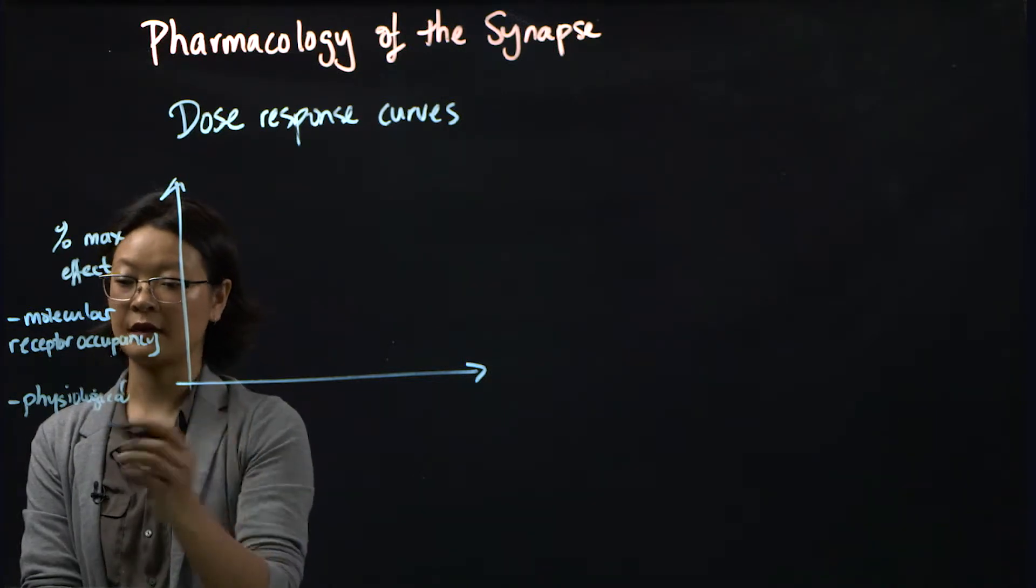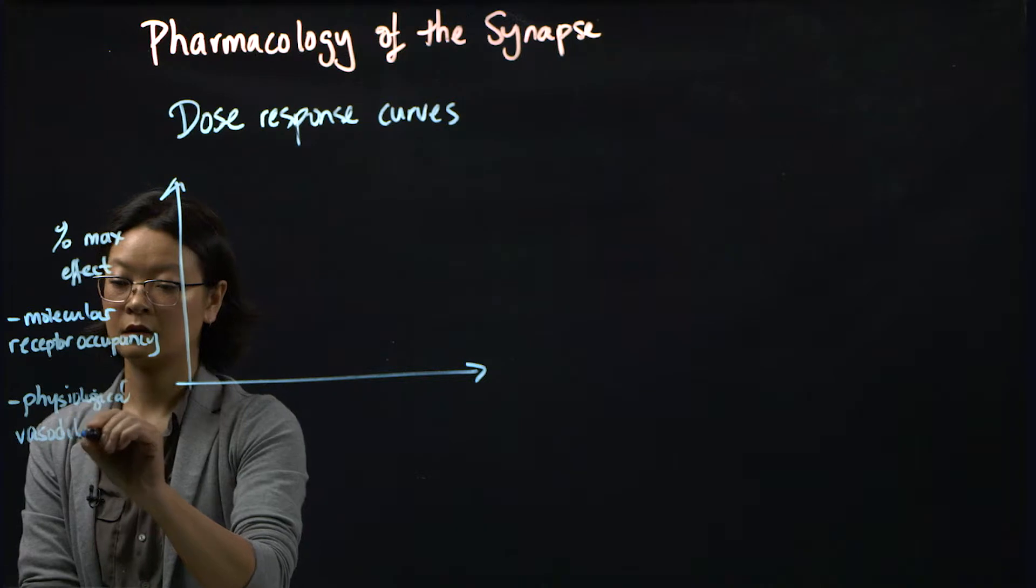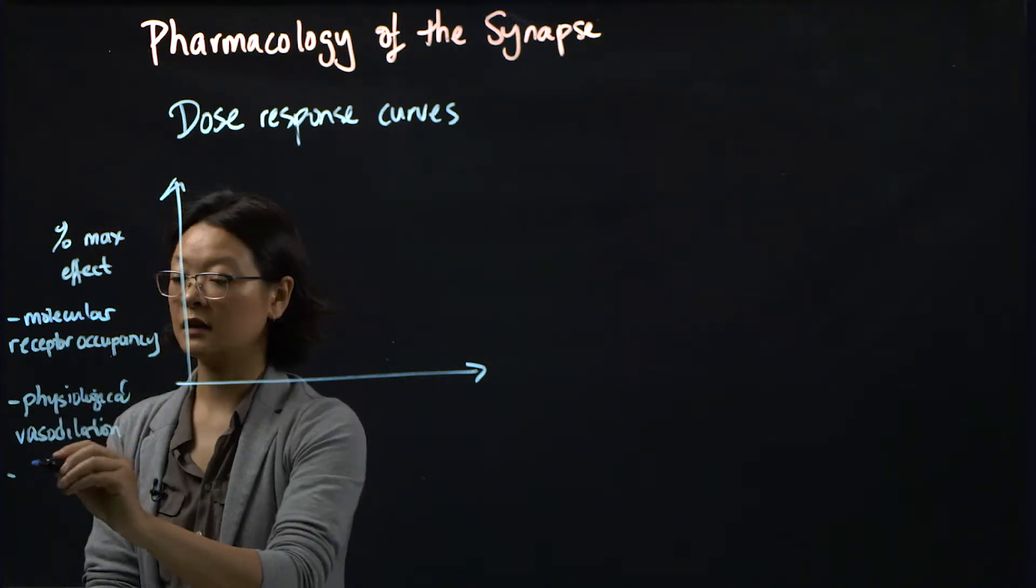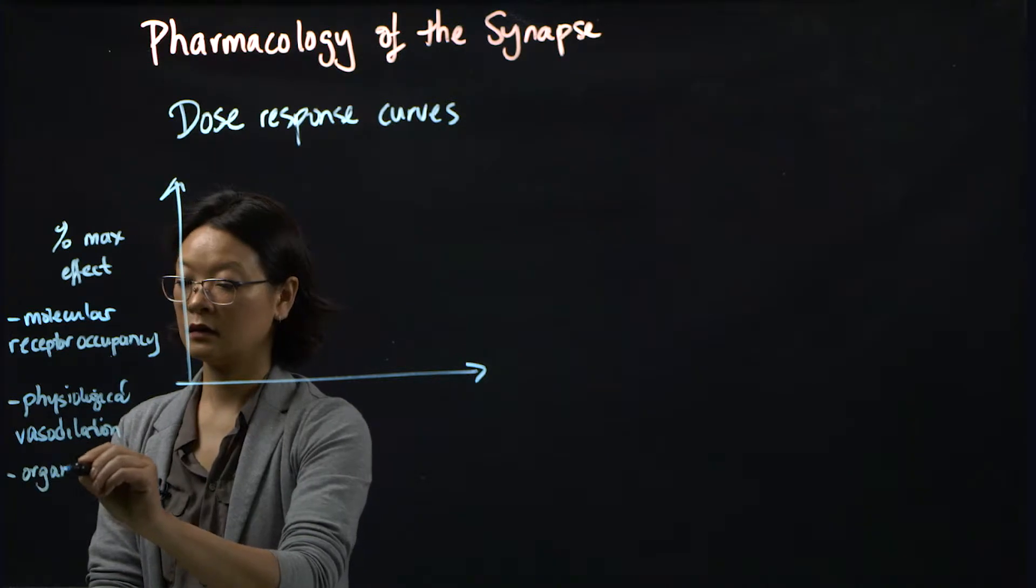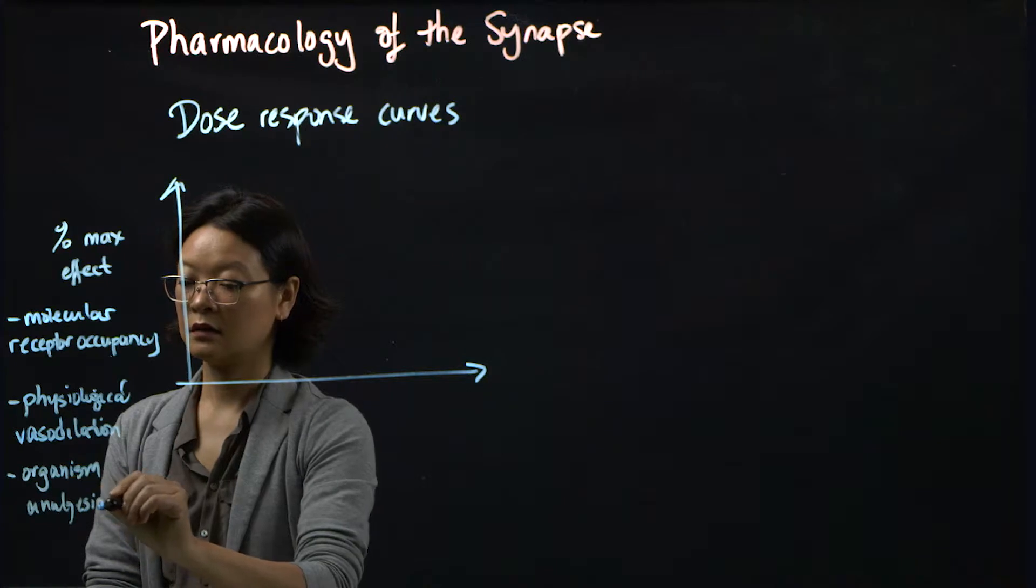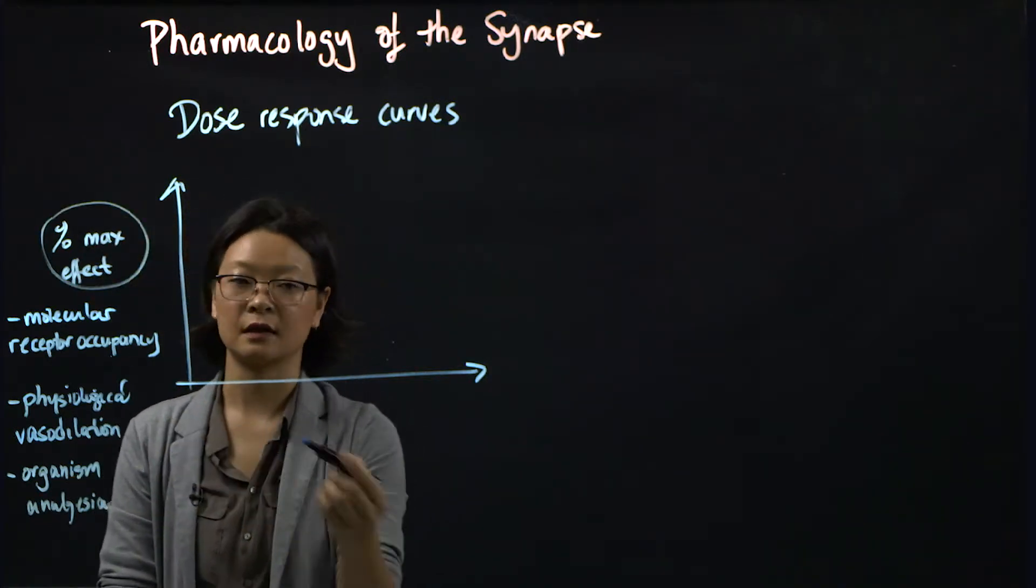Or it can be something more physiological. For example, something like vasodilation. Or something at the organism level, such as analgesia.